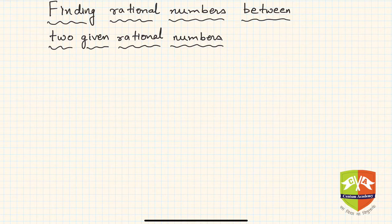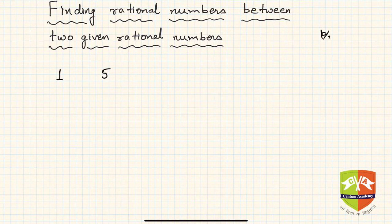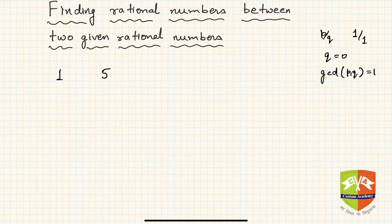Let us say one rational number is 1 and another rational number is 5. Both are rational numbers. Why? Because both are of the form P/Q. 1 can be written as 1 upon 1, Q is not equal to zero, and GCD of P and Q is 1. These are the three criteria for rationality: A, B, and C.